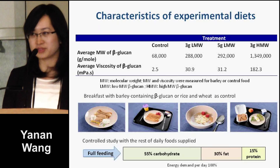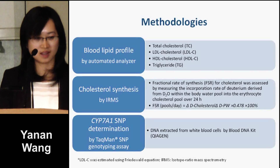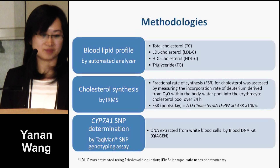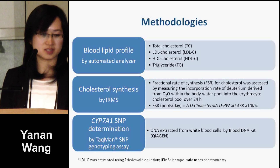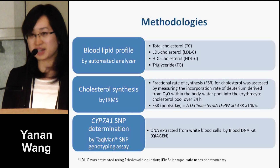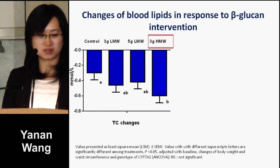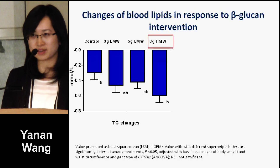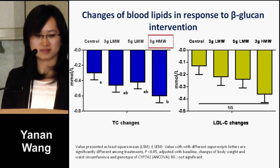Good morning. I'd like to thank the organizing committee for giving me this great opportunity to present a section of my study regarding the mechanisms responsible for the cholesterol-lowering effect of beta-glucan. Beta-glucan is a major soluble fiber in barley. This polysaccharide consists of beta-D-glucosyl units joined by 1,3 and 1,4 glucosidic bonds. The cholesterol-lowering effect of beta-glucan has been well documented. The health claim that a daily intake of 3 grams of beta-glucan from oats or barley can actively reduce cholesterol levels has been approved by several regulatory agencies, including FDA in the U.S., EFSA in Europe, FSANZ in Australia and New Zealand, and Health Canada.